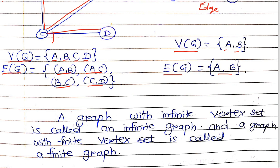A graph with an infinite vertex set is called an infinite graph, and a graph with a finite vertex set is called a finite graph. For example, all the stars in the sky can be represented as an infinite graph. Hope you understood the concept of graph — thank you.